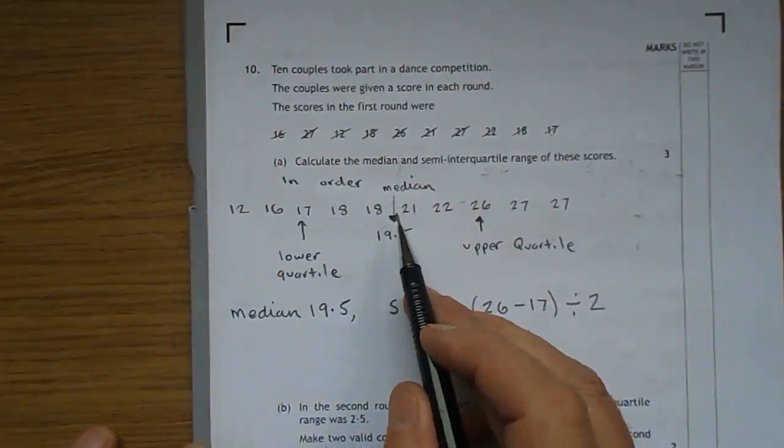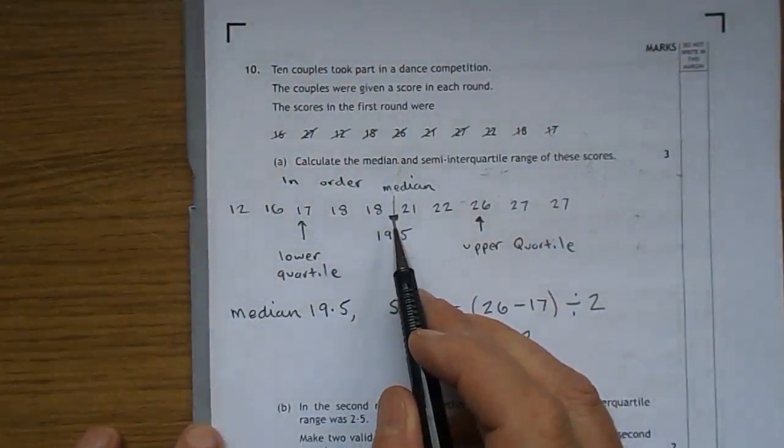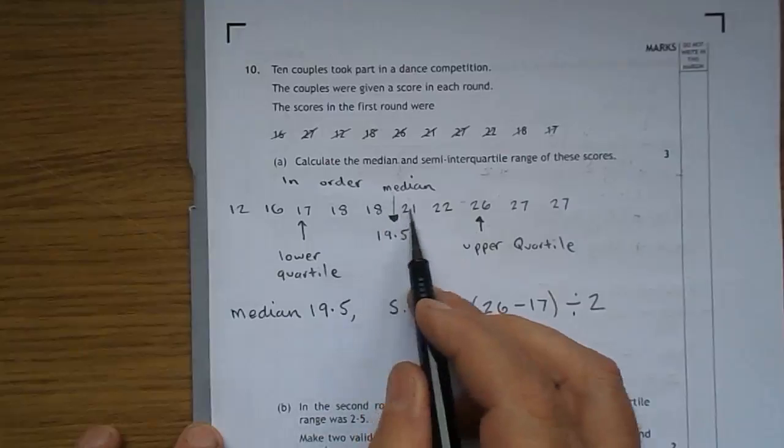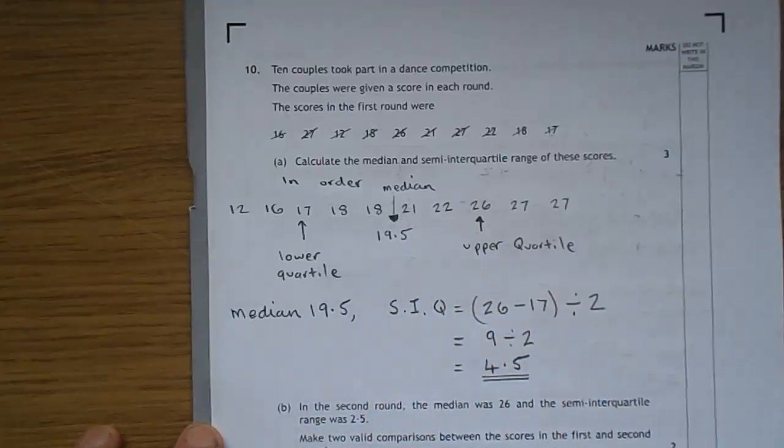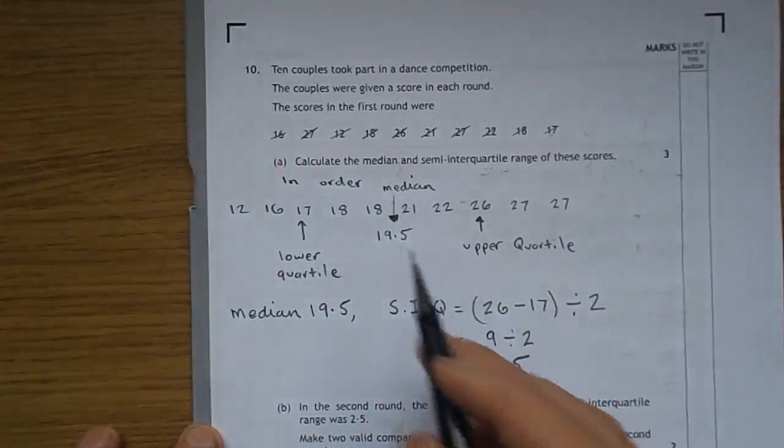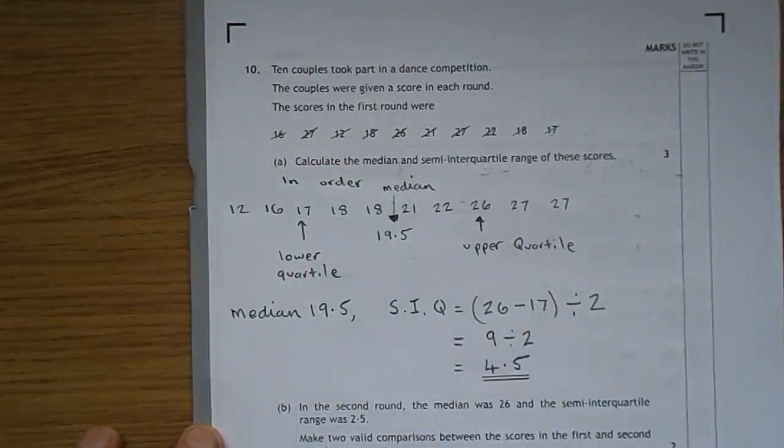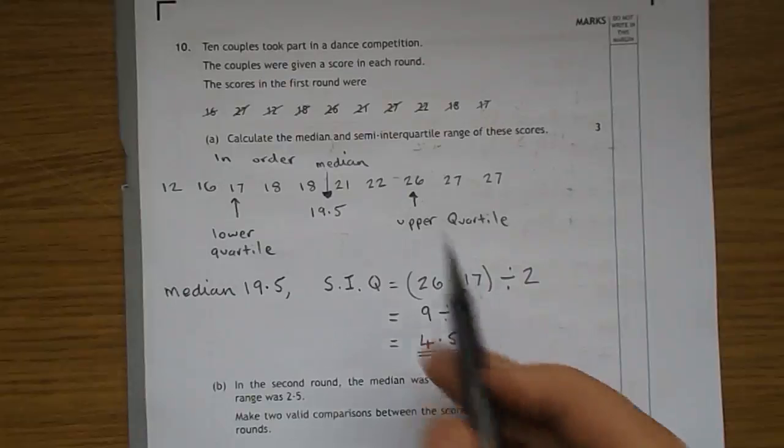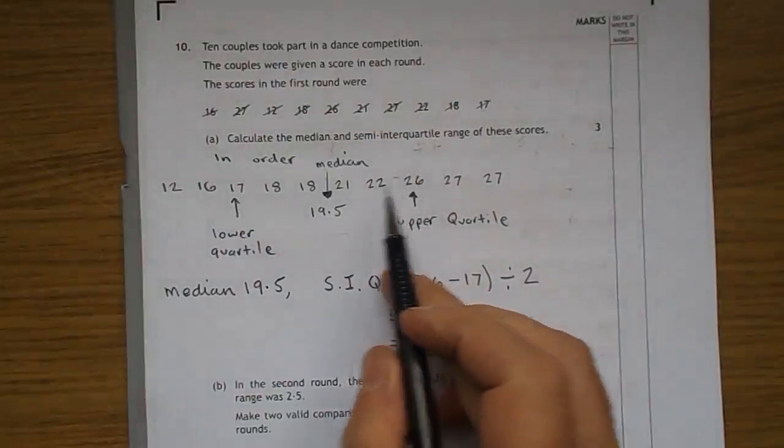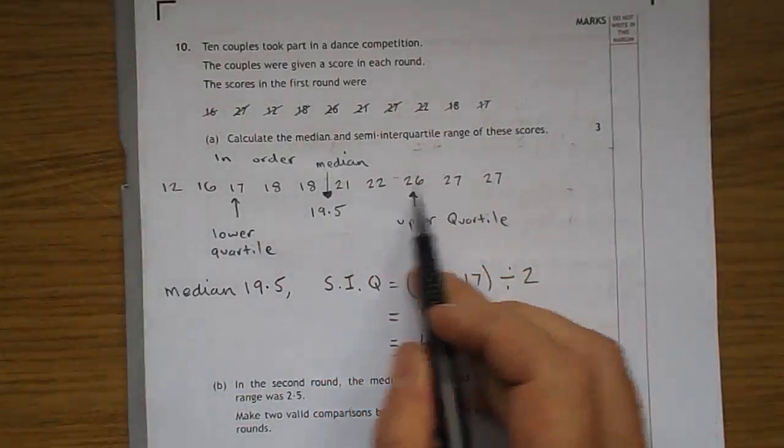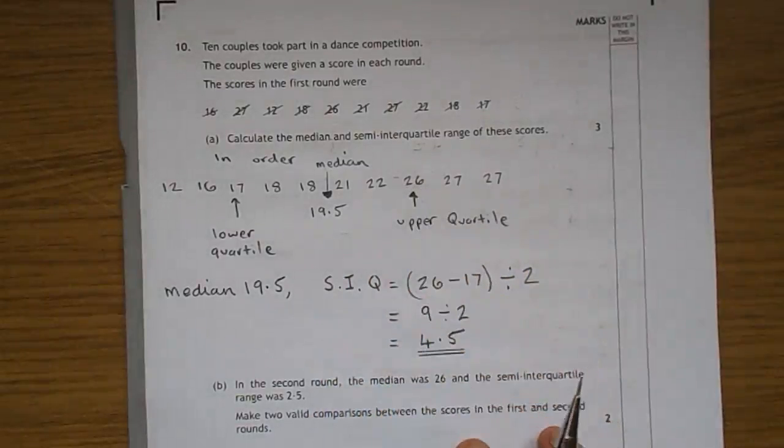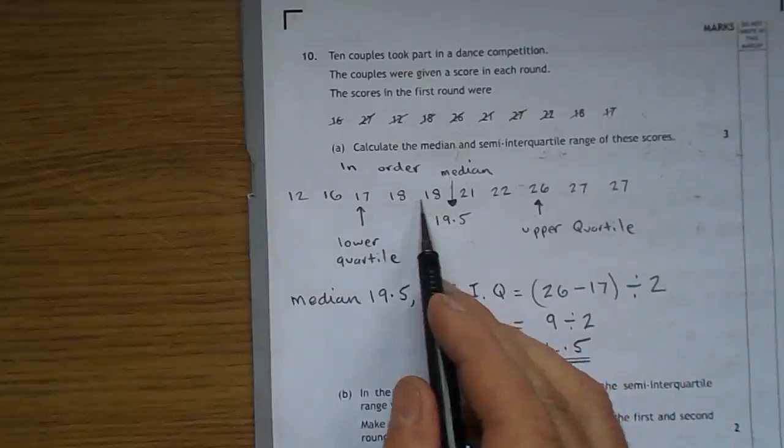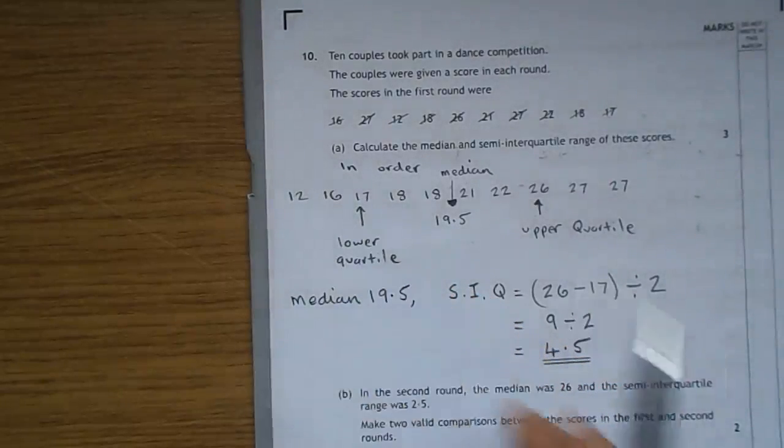The median is the one in the middle. Obviously with 10 couples there's not actually a number in the middle, so it has to be between 18 and 21. Halfway between 18 and 21 is 19.5. The upper quartile is the median of the top five numbers, one in the middle there: 26. The lower quartile is the median of the bottom five: 17.